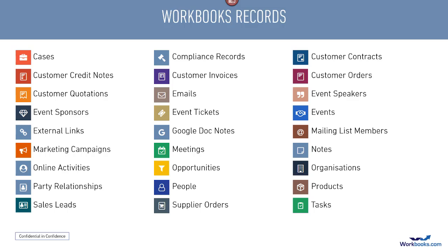Workbooks allows you to store and leverage important information about your prospects, your customers, partners and suppliers all in one database. Out of the box we provide approximately 30 different record types, which you can see here. Exactly what you've got will depend on which version of the product you're using. If you need something that we don't provide, you can create custom objects or records.